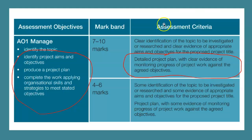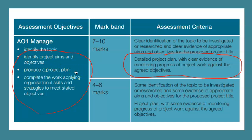Here is the assessment criteria. AO1 is called 'manage'. You'll see: identify project aims and objectives, produce a project plan — that will be our main focus today — and complete the work applying organisational skills and strategies. With the EPQ, the onus is upon you to show evidence of the work that goes on behind the scenes. The idea of the production log is to make the invisible work visible for the examiner.